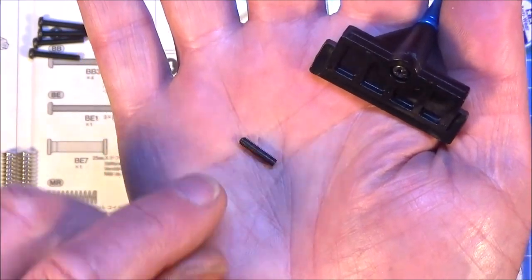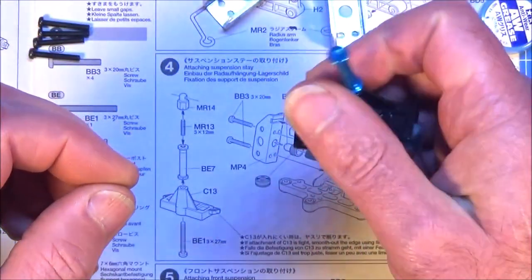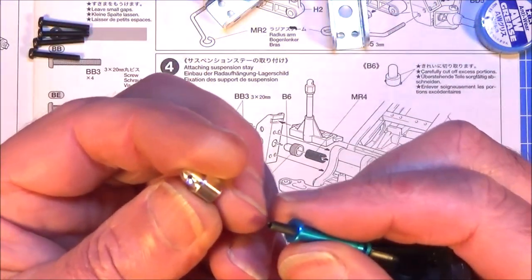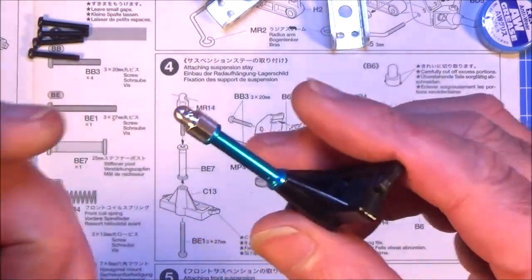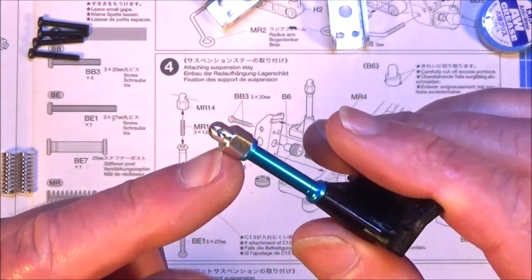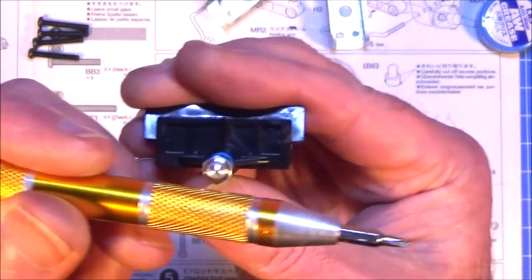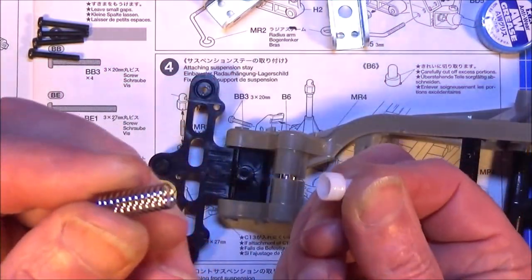Then you need this 3x12 threaded bar and that's going to go in the top. And that will hold on the alloy body post. And try as best you can to get the hole to line up so that it's in that direction.